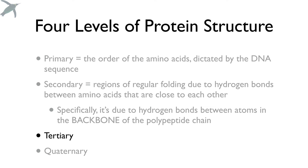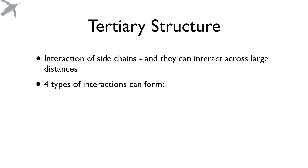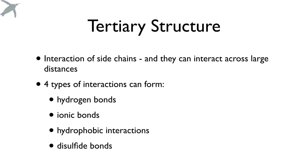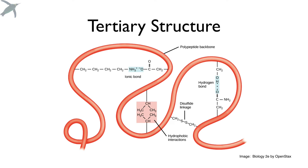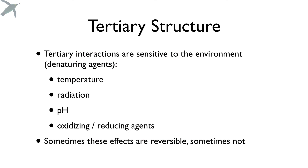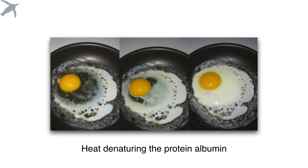We're up to the third level of protein structure — tertiary. This level is all about the side chains, those R groups, and the chemical interactions they have with each other — either close by or across great distances in the protein. There are four different types of interaction. In the tertiary structure, we see the complete three-dimensional shape of the polypeptide chain. This is also where we get into denaturing agents, which can cause those tertiary structures to break down — sometimes reversibly, sometimes not. You've probably fried an egg: that is the denaturing of the egg white protein albumin.